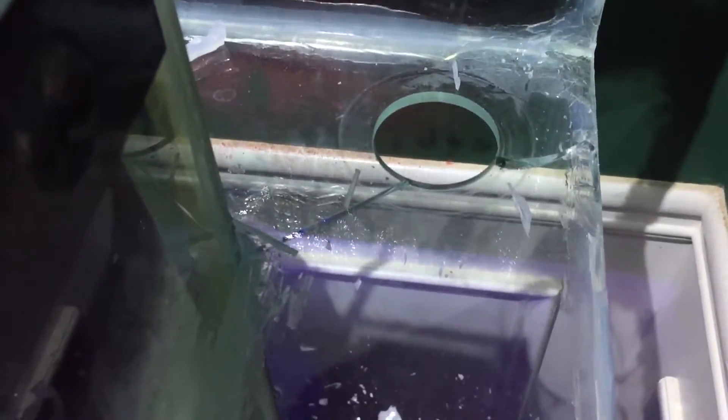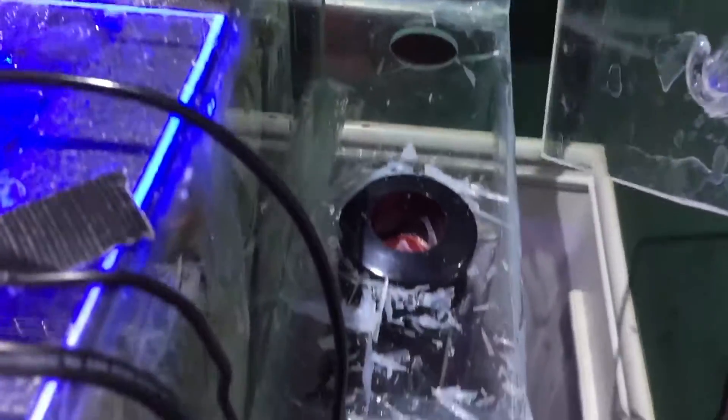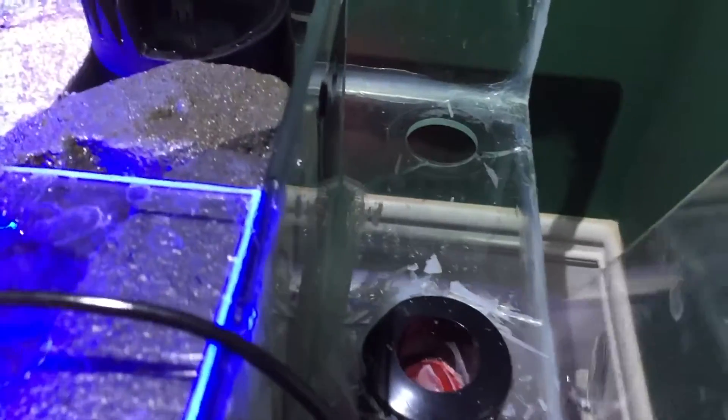But there you go, lesson learned. Be careful of the stresses that your plumbing places on the glass that's going through it. The plumbing can be pretty heavy once it fills with water. This is one and a quarter inch tubing filled with water and it was heavy enough that it resulted in that fracture.